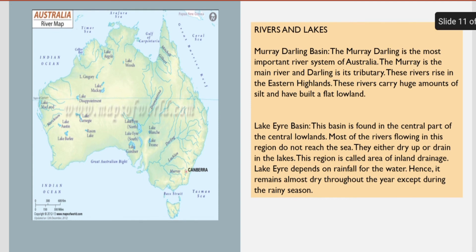This region is called inland drainage. The Finke River is among the important rivers here and it remains almost dry throughout the year except during the rainy season.